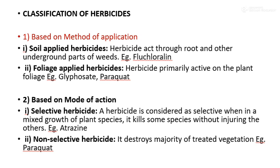Classification of herbicides based on method of application. There are two types: first is soil-applied herbicide and second is foliage-applied herbicide. Soil-applied herbicides act through the root and other underground parts of the weed. Example: fluchloraline. This type is mostly used for controlling perennial weeds. Foliage-applied herbicides are primarily active on plant foliage. Example: glyphosate and paraquat.